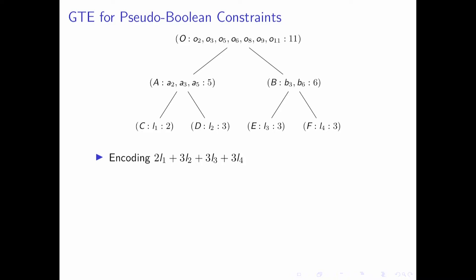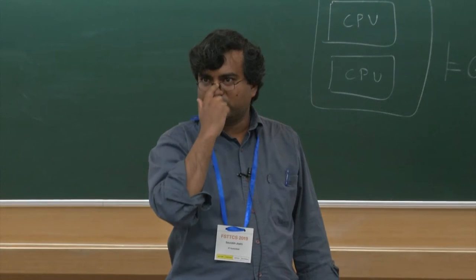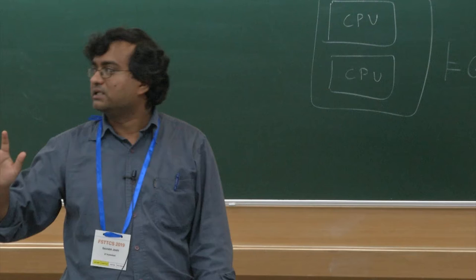Let me explain the encoding from 2015 — it is very simple. For a weighted summation, for every literal with weights (say 2, 3, 3, 3), you build a binary tree to capture the running sum. For example, if l1 is true, a clause forces the internal node a2 to be true, registering that a weight of 2 has been witnessed. Similarly, if l2 is true, it forces a3 to become true, witnessing weight 3. If both are true, 2 plus 3 equals 5, and so on for the entire tree.